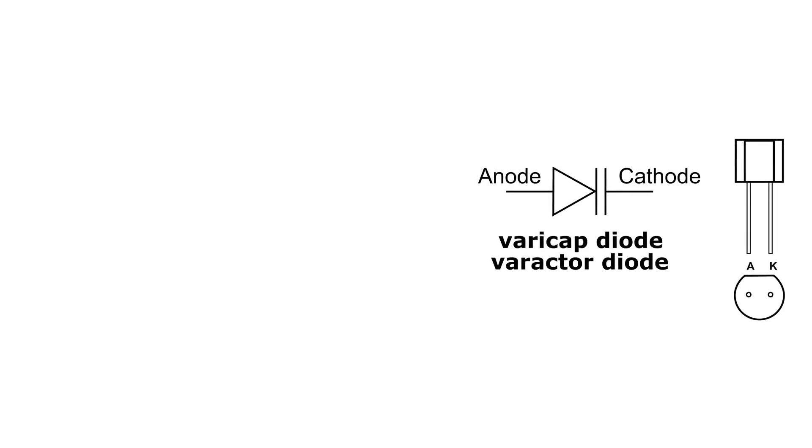On the left side of the drawing, this is the circuit symbol for a varicap diode or a varactor diode, and there's more names than that like tuner diode, but these were the ones that I found most often.